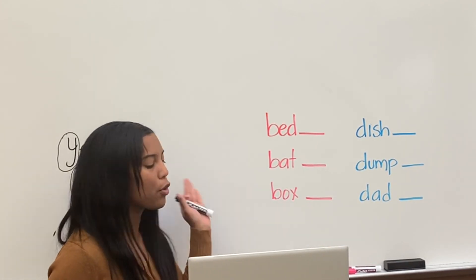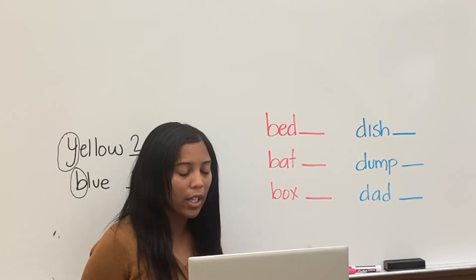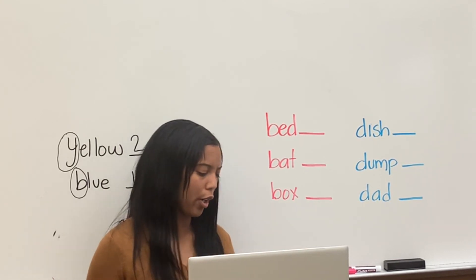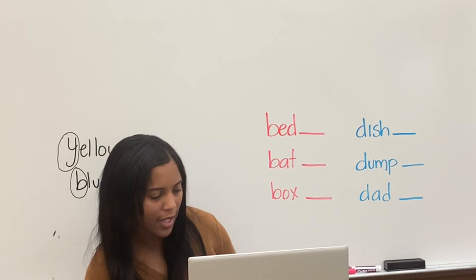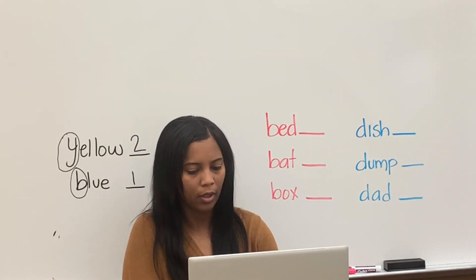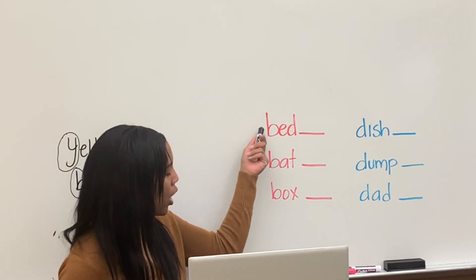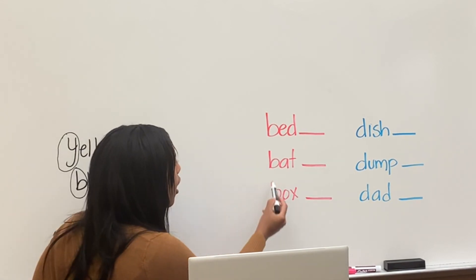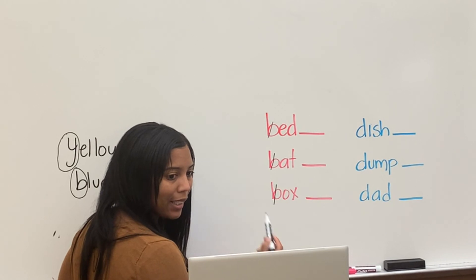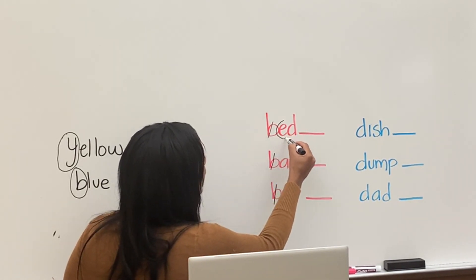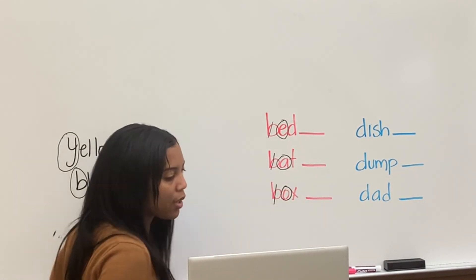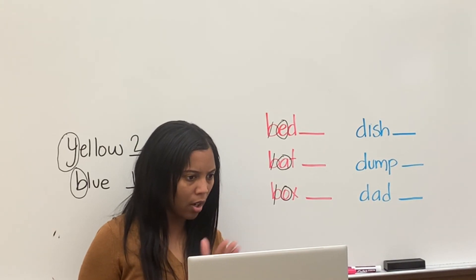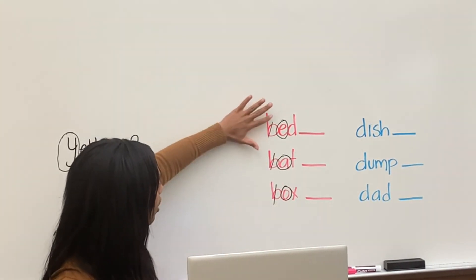How could I put these in ABC order when they all start with the same letter? It changes whenever they all start with the same letter. Since they all start with the same letter, guess what you do? You go to the second letter — but only when words start with the same letter. So they all start with B, so I'll look at the second letter: E, A, and O. Those three letters will help me determine which word goes first, second, and third.